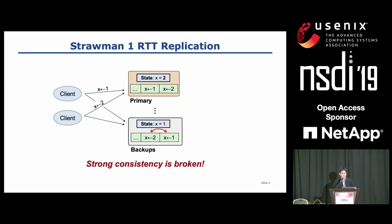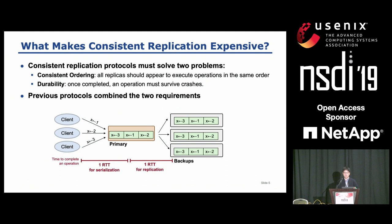For a replication to be consistent, it must guarantee the following two properties. The first one is consistent ordering, which means all replicas should appear to execute operations in the same order. The second property is durability, which means all completed operations must survive crashes. The traditional replication protocol combines these two requirements, which prevented us from having 1 RTT replication.